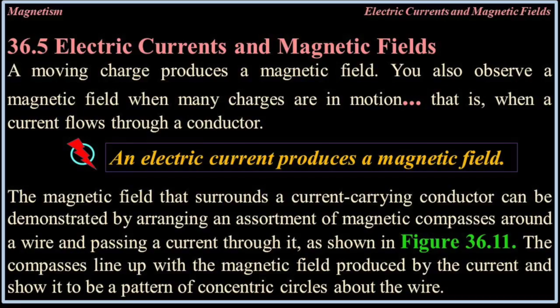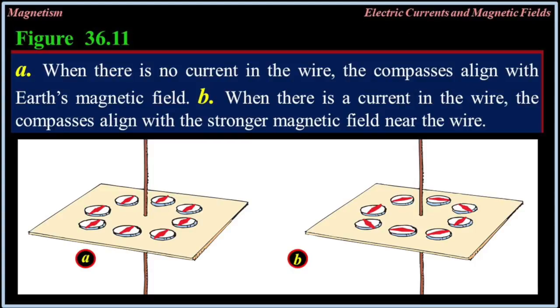36.5 Electric currents and magnetic fields. A moving charge produces a magnetic field, and you also observe a magnetic field when many charges are in motion — that is, when a current flows through a conductor. An electric current produces a magnetic field. The magnetic field that surrounds a current-carrying conductor can be demonstrated by arranging an assortment of magnetic compasses around a wire and passing current through it. The compasses line up with the magnetic field produced by the current and show it to be a pattern of concentric circles about the wire.